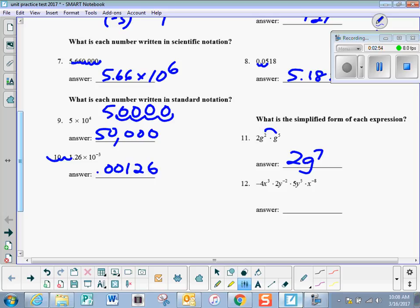On number 12, I multiply my numbers like I always have multiplied numbers. Negative 4 times 2 is negative 8, times 5 is negative 40. I have x to the 3 plus negative 8 is negative 5, y to the negative 2 plus 5 is y to the 3rd. And then if I have any negative exponents, I have to simplify. So this is going to be negative 40y cubed over x to the 5th.